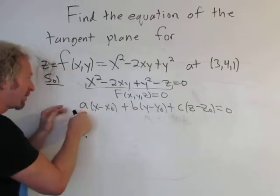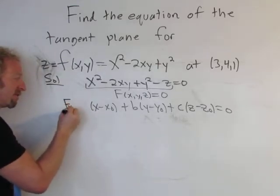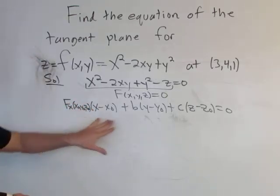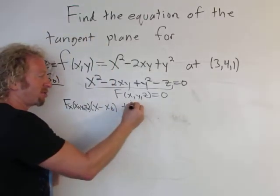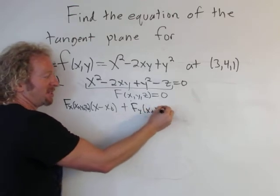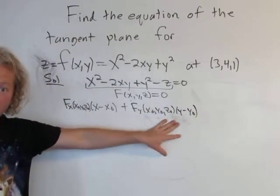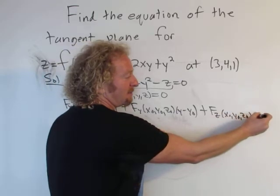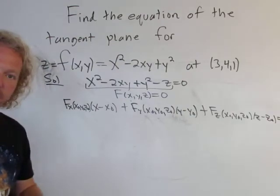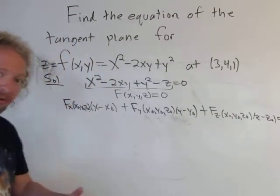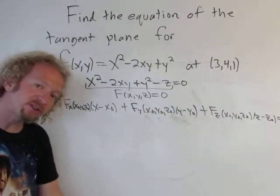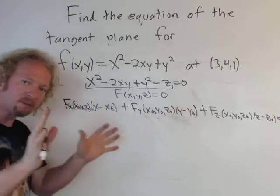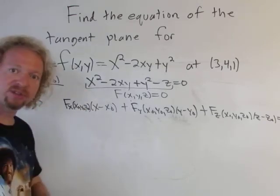The first component of the normal vector, a, is the partial derivative of F with respect to x evaluated at (x₀, y₀, z₀). Component b is the partial with respect to y, and c is the partial with respect to z — all evaluated at the point. The gradient vector's components are the first partial derivatives, so now all we do is compute them and plug in the numbers.